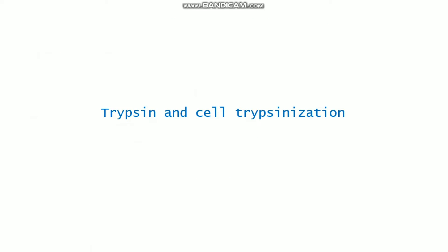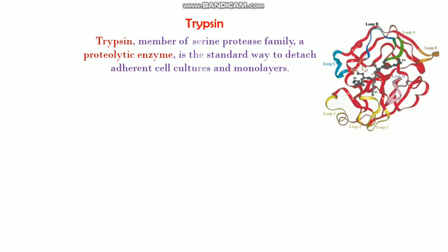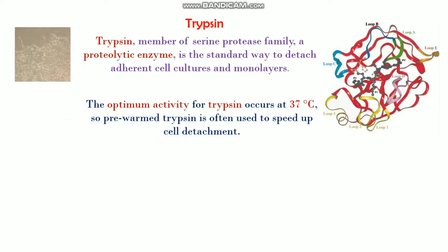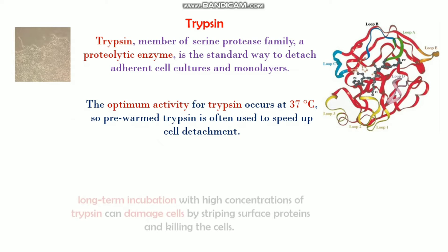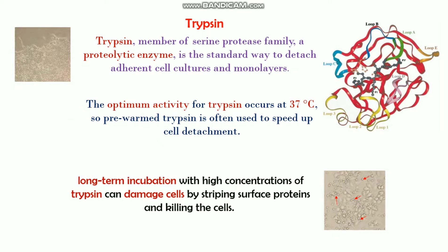Next is trypsin and cell trypsin digestion, which is very important when you do cell culture. First you need to know what trypsin is. Trypsin is basically a member of the serine protease family — a proteolytic enzyme. Trypsin is normally used to detach adherent cells and monolayers. The optimum activity for trypsin is normally at 37 degrees centigrade.